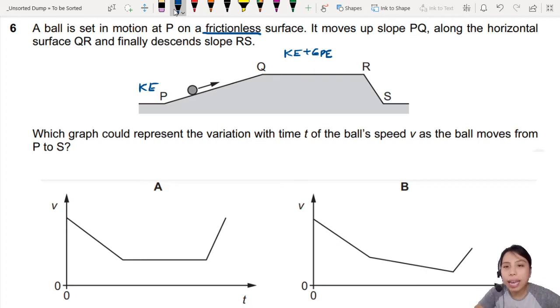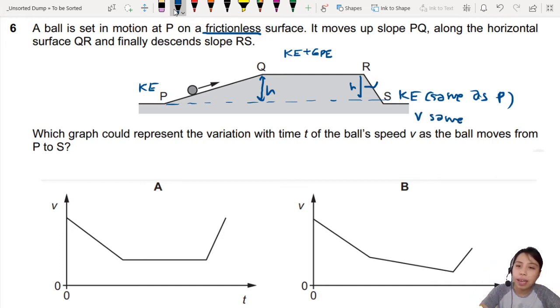Then, at the end, you go down to S. Are you at the same height from the beginning? Yeah. So that means your final kinetic energy should be the same as when you were at P. Because you go up the same height, you come down the same height. So it should be the same kinetic energy, no energy loss. Kinetic energy must be the same, means the velocity has to be the same from what was in the beginning. So V initial, V final must be the same.